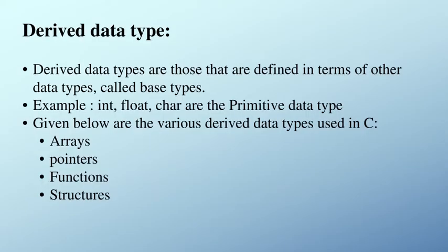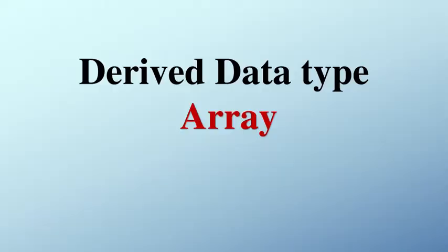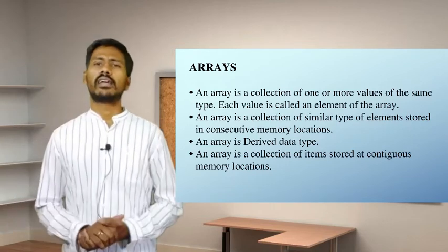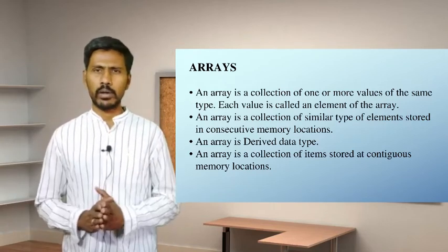In C program, there are many derived data types. We will discuss the array derived data type. What is an array? An array is a collection of data, or a collection of elements. Array is a derived data type.